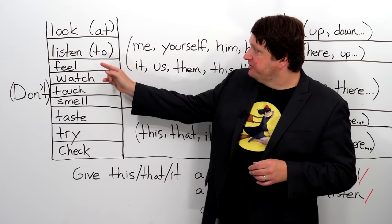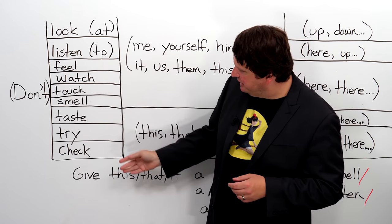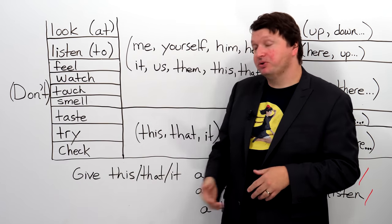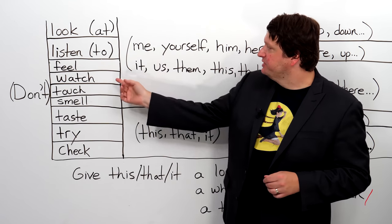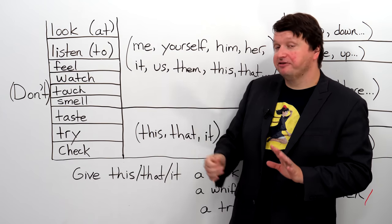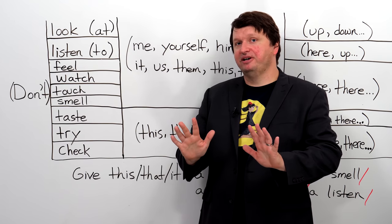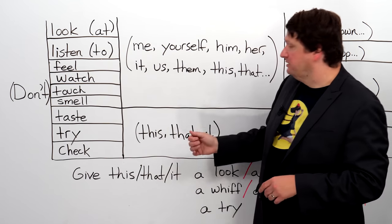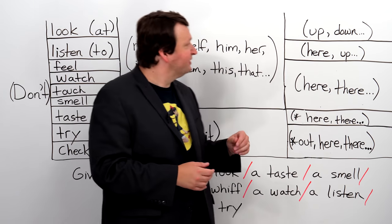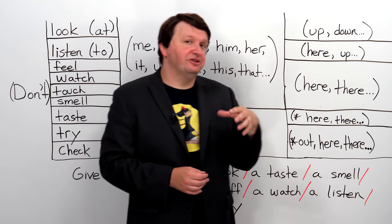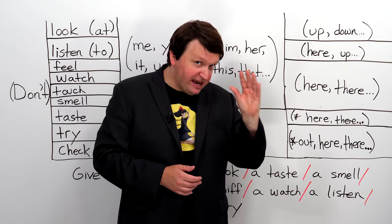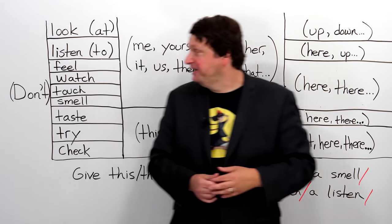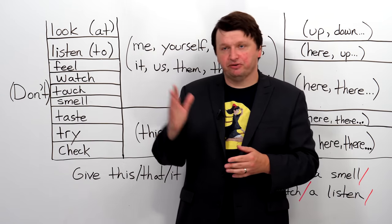Watch is different from see. Watch refers to paying attention with your eyes — you watch movies, you watch TV shows. You can say watch me, watch yourself. Watch yourself has an idiomatic meaning: I'm a little uncomfortable with what you're saying right now, so take a step back, be careful — watch yourself. You can also say hey watch this if you have a video on your phone, or watch that. Watch here, watch there — if you're showing someone a YouTube video and want them to pay attention to a specific part.